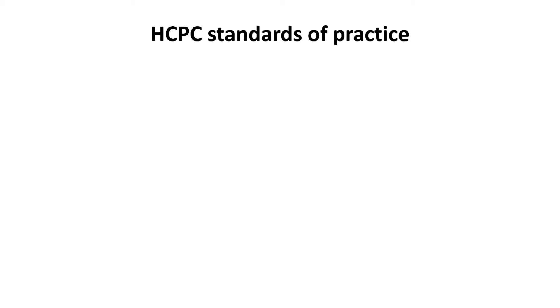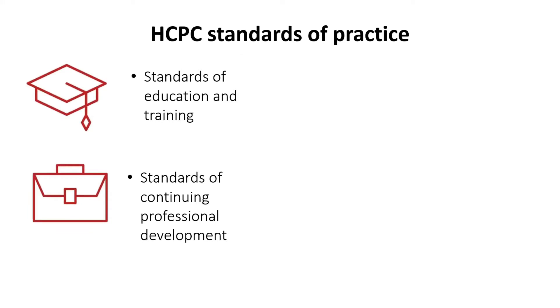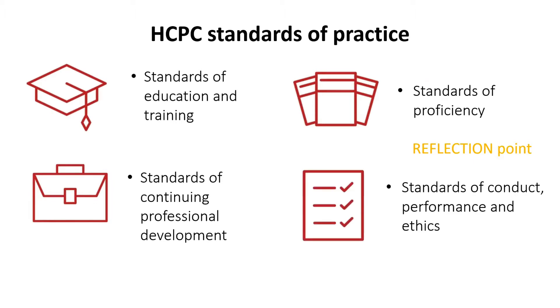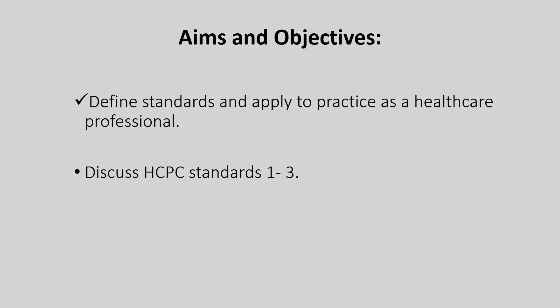The ACPC divides the standards into four macro categories. There are the standards of education and training, the standards of continuing professional development, the standards of proficiency — which are the big ones and at the end of which we will do a little reflection — and then there are the standards of conduct, performance and ethics. We will go and discuss the first three standards.